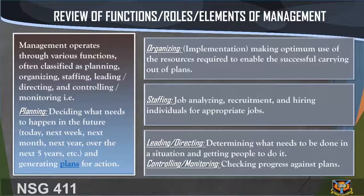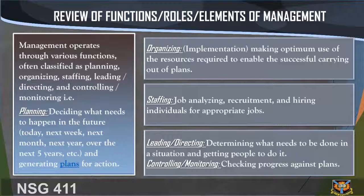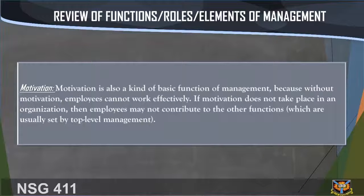Review of functions, roles, and elements of management. Management operates through various functions often classified as: planning, organizing, staffing, leading or directing, and controlling or monitoring. Planning means deciding what needs to happen in the future — today, next week, next month, next year, over the next five years — and generating plans for action. Organizing means making optimum use of resources required to carry out plans. Staffing involves job analysis, recruitment, and hiring individuals for appropriate jobs. Leading or directing means determining what needs to be done and getting people to do it. Controlling or monitoring means checking progress against plans.